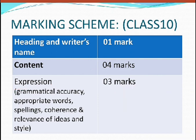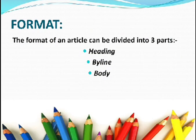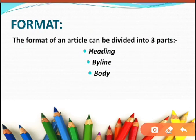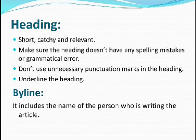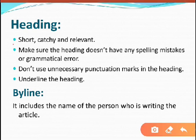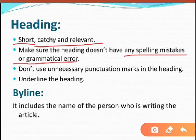The format of an article can be divided into three parts: heading, byline, and body. The heading should be short, catchy, and relevant. Make sure the heading doesn't have any spelling mistakes or grammatical errors, because this creates a bad impression on the examiner. Don't use unnecessary punctuation marks in the heading. Underline the heading — this is very important.